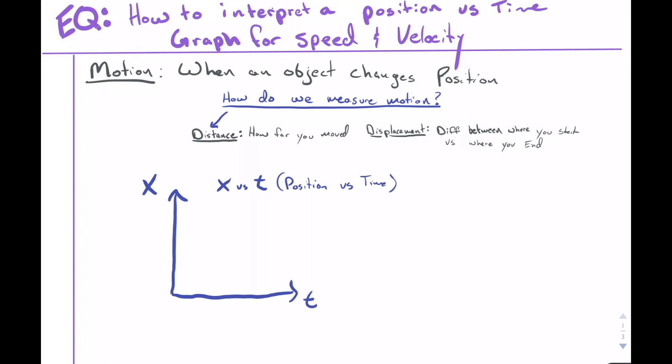Let's get started. First thing: how to interpret a position versus time graph for speed and velocity. This is something we're going to do quite often in our course, and it also lays the foundation to help you understand how to read other types of motion graphs.